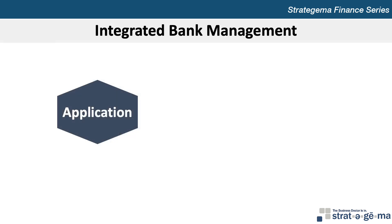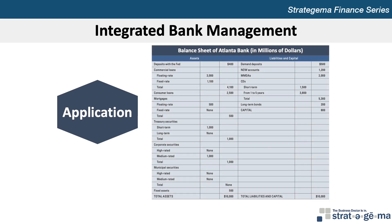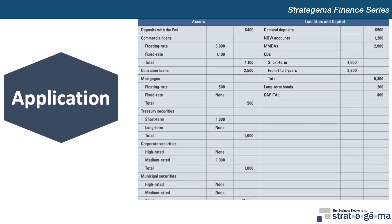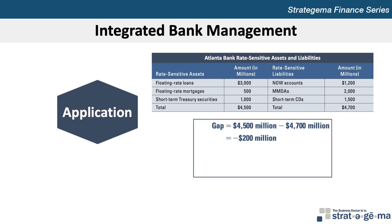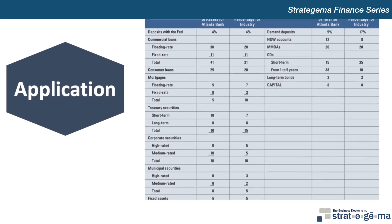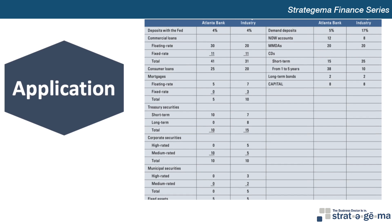Let's look at a comprehensive example. Assume that you're hired as a consultant by Atlanta Bank to evaluate its favorable and unfavorable aspects. Atlanta Bank's balance sheet is shown in this exhibit, from which we can identify key rate-sensitive assets, including floating-rate loans, mortgages, and short-term treasury securities, and liabilities, including NAL accounts, MMDAs, and short-term CDs, which we can summarize in this exhibit. This allows us to determine the bank's gap, which is negative $200 million, and the gap ratio of 0.957 or 95.7%. We can also modify the balance sheet to express all line items as a percentage of total assets for easy comparison to the industry, and identify how Atlanta's rate-sensitive assets and liabilities differ from industry averages. Pause the video and take note of the items that differ substantially from industry averages in this example.